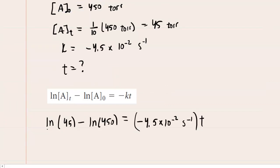So what you want to do next is pick up your calculator and type this entire expression in. And when you do that, you should get about negative 2.30. And then to finish solving this for t, the time, we're going to divide both sides of this equation by negative 4.5 times 10 to the minus 2 inverse seconds.